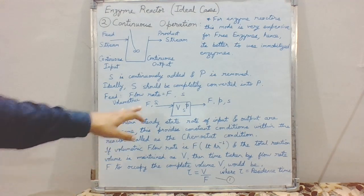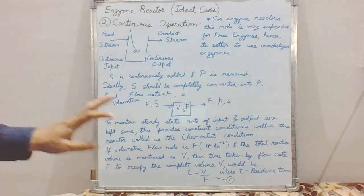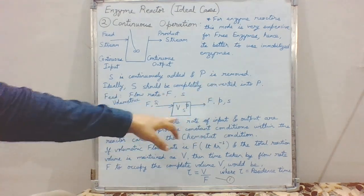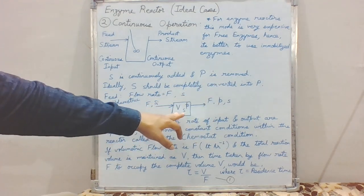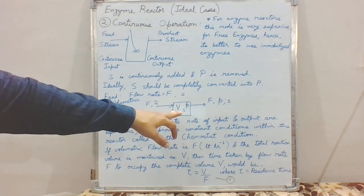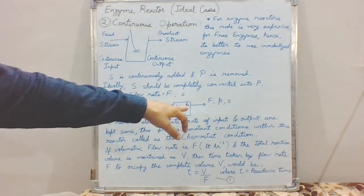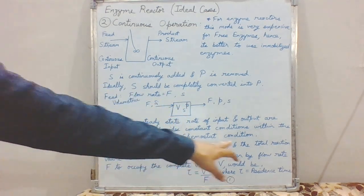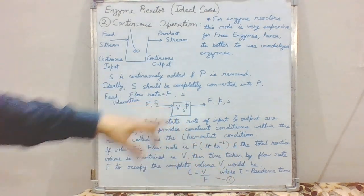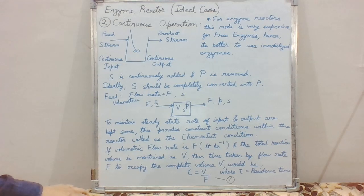At steady state, the flow rates are maintained constant so that the conditions inside the reactor are constant. This constant concentration condition is called the chemostat condition of a continuous reactor.